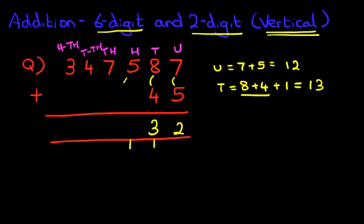Now we've got the hundreds column. We have 5 plus 0. Don't forget the one we've carried over. 5 plus 1 is 6.